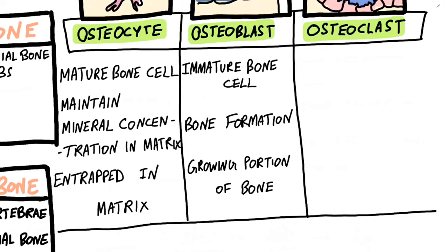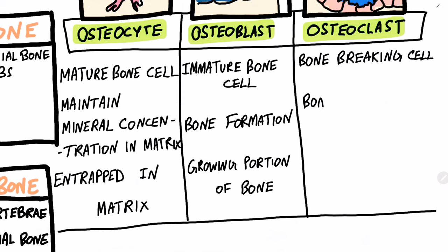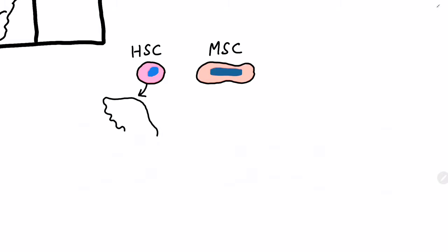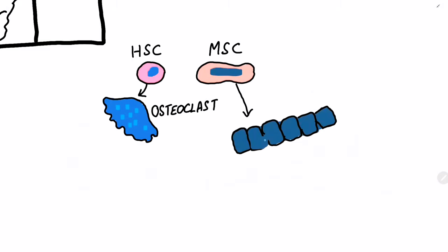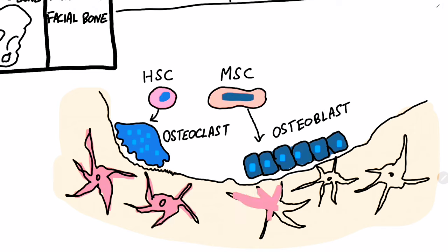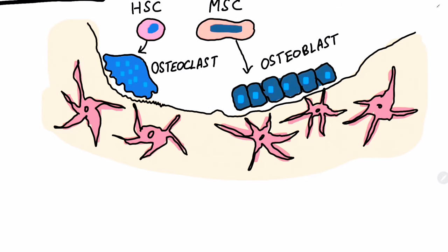Osteoclasts are bone-breaking phagocytic cells derived from hematopoietic stem cells. They are involved in bone remodeling and are present in areas where an extra amount of bone needs to be scraped off. Osteoclasts break the bone and supply calcium to the blood, whereas osteoblasts, derived from mesenchymal stem cells, utilize calcium from the blood and form new bone. Osteoblasts are converted to osteocytes when they get trapped. Hence, osteoblasts and osteoclasts are important regulators of bone formation and calcium homeostasis.